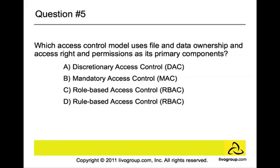Question number five: which access control model uses file and data ownership and access rights or permissions as its primary components? The answer is A, discretionary access control. This is similar to question number one. The important concepts in discretionary access control are file and data ownership and the capability model. The access policy on discretionary control is determined by the owner of an object.